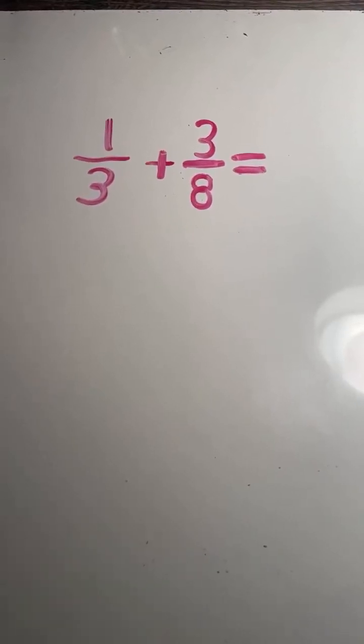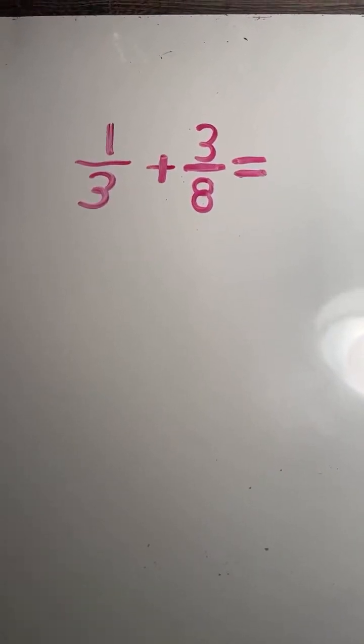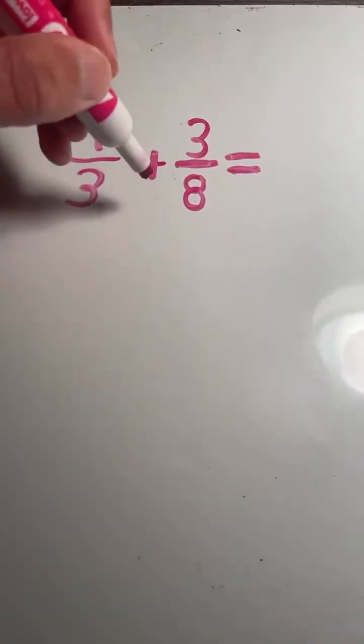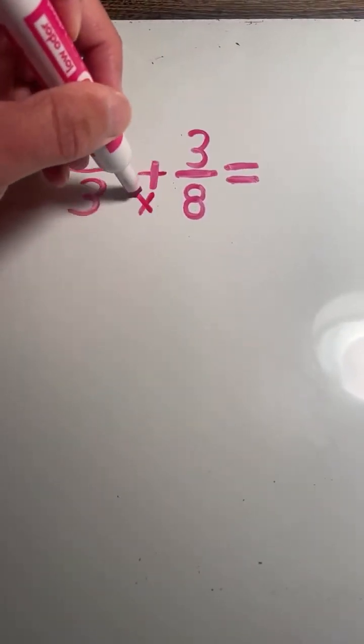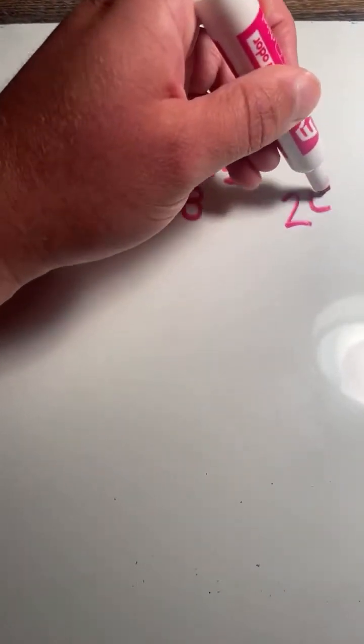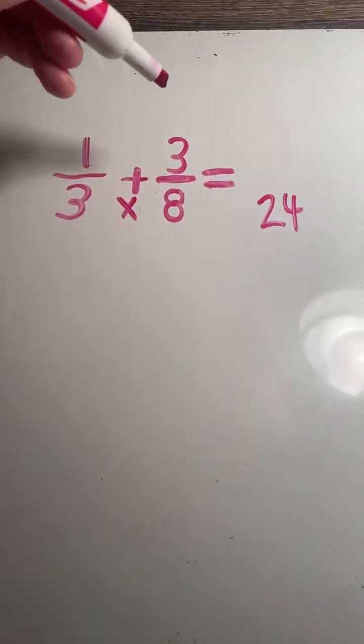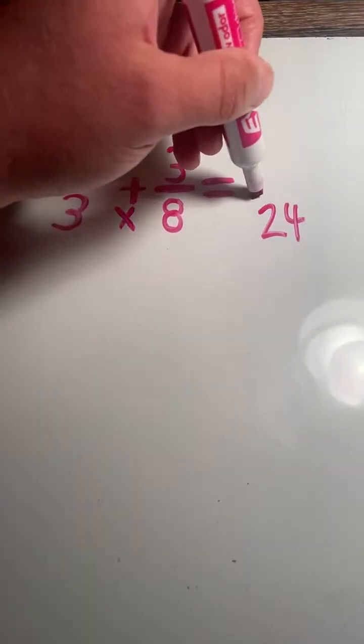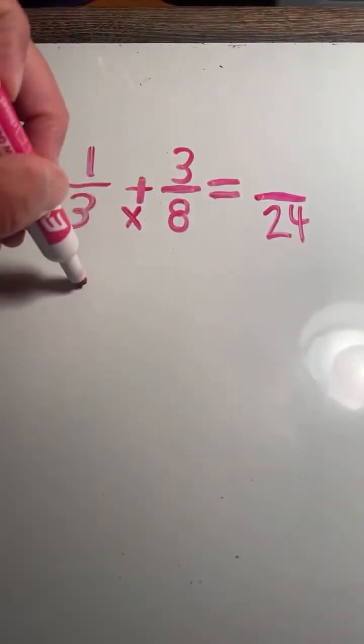Next example problem: 1/3 plus 3/8. Step 1, we multiply our denominators to find a common denominator. 3 times 8 equals 24. So 24 is our common denominator.